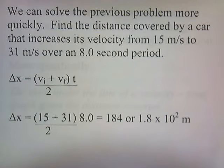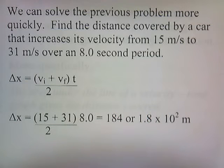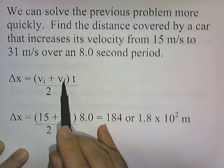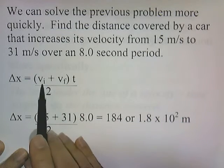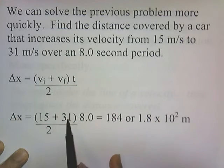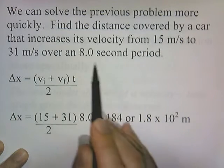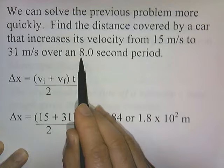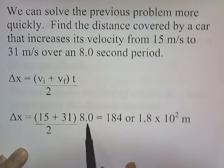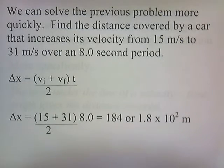We can solve the previous problem more quickly using this formula. The problem: find the distance covered by a car that increases its velocity from 15 meters per second to 31 meters per second over an 8-second period. Delta x equals vi plus vf divided by 2 times t. So 15 plus 31 divided by 2 times 8 gives 184 meters.